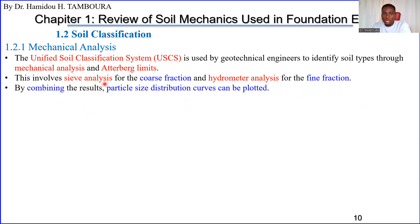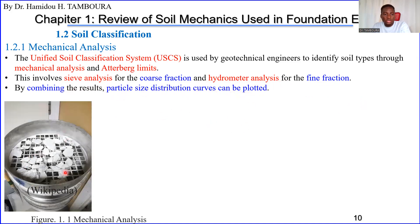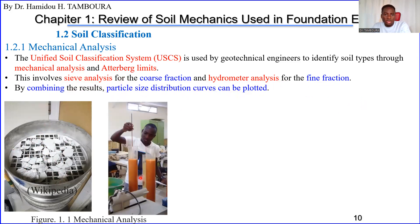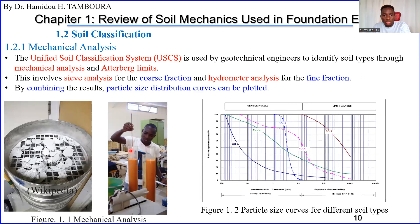By combining sieve analysis and hydrometer analysis we can obtain the particle size distribution curve of each soil. There are photos showing the sieve analysis setup and the hydrometer analysis. All the details of these tests are in the soil mechanics class. From these tests we can get the particle size distribution curve for many types of soil.